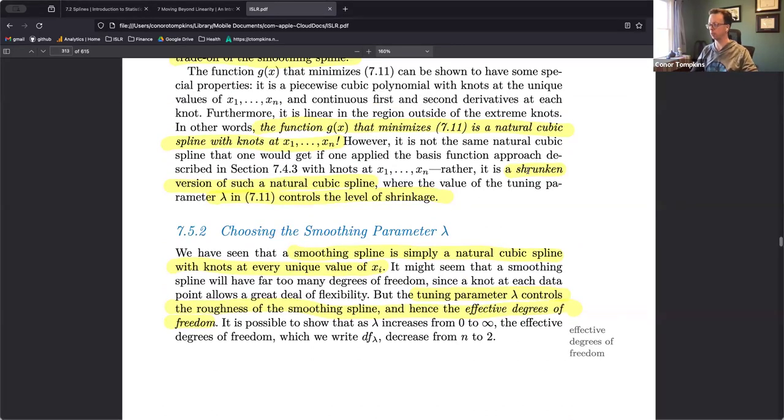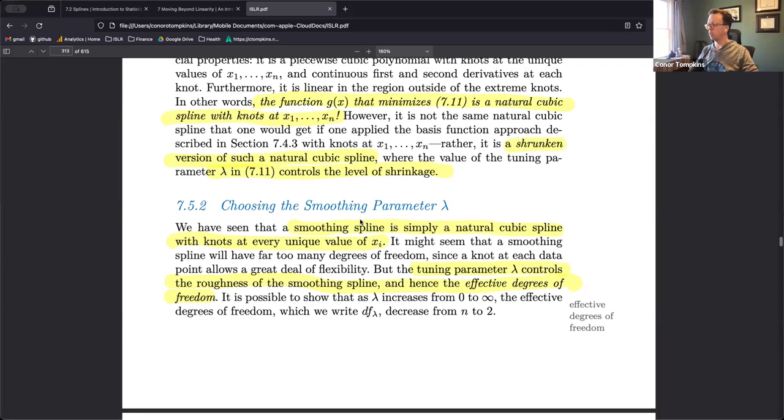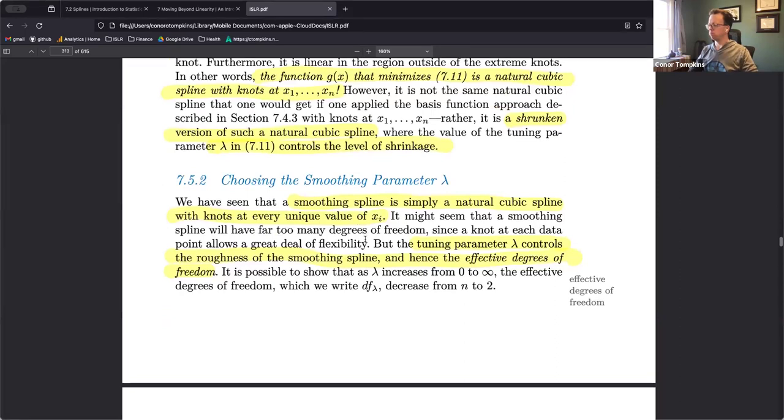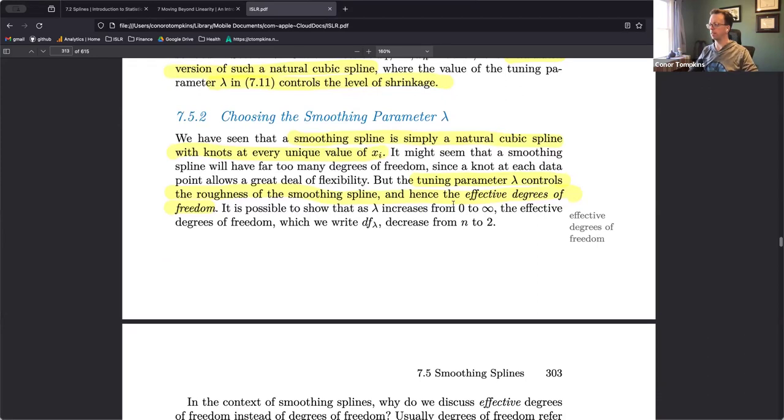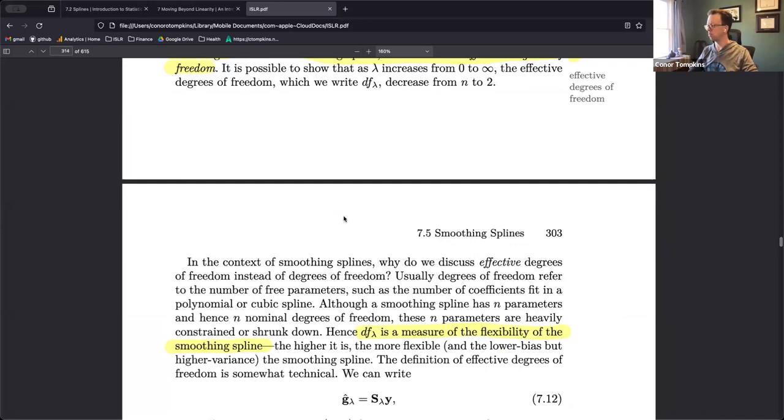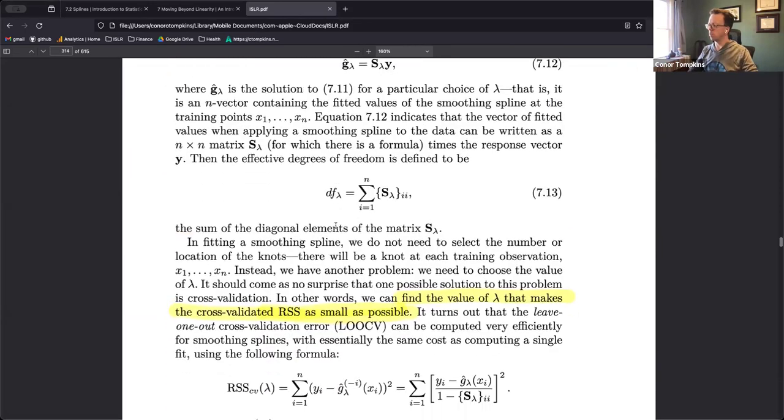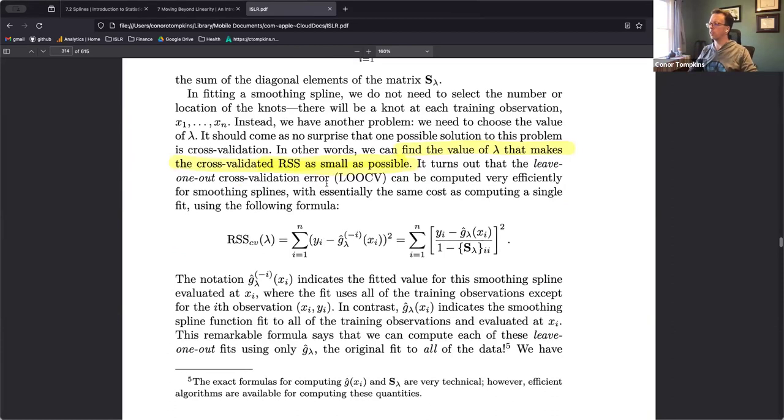Effective degrees of freedom here. So the idea is that there's a penalization and shrinking of the spline, which goes back to ridge. This term here controls the level at which the spline is shrunk. If you increase the penalty, then the effective degrees of freedom goes down.